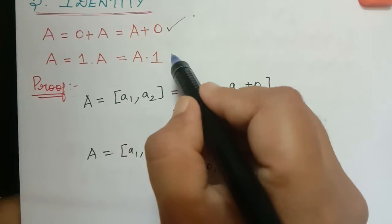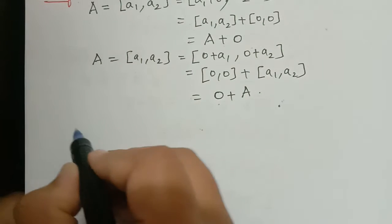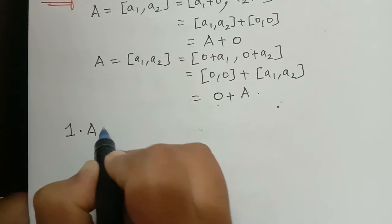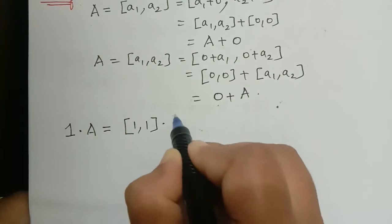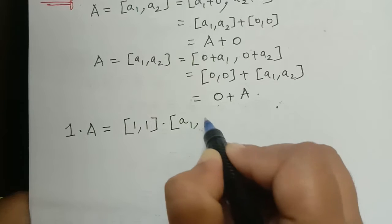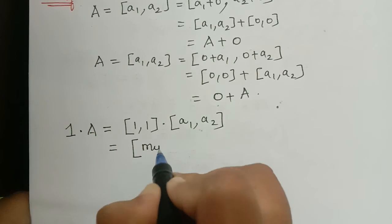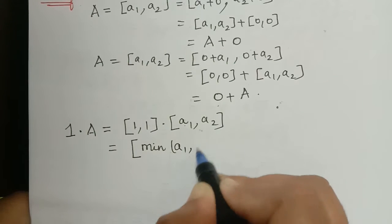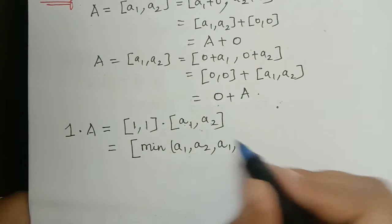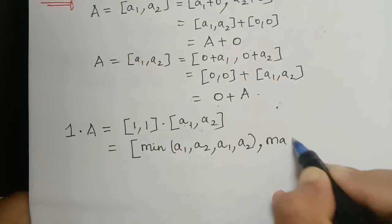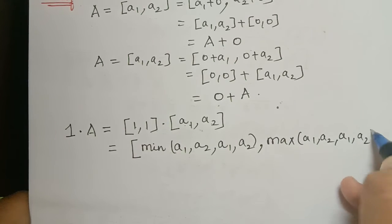The second multiplicative identity property is this. We shall consider 1 multiplied with a. So 1 multiplied with a will be equal to — this 1 is what? The closed interval [1, 1] multiplied with [a1, a2]. By the definition, it will be minimum of 1·a1, 1·a2, 1·a1, 1·a2, comma maximum of a1, a2, a1, a2 in the same way.